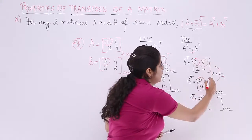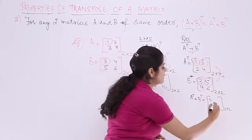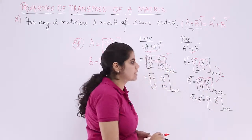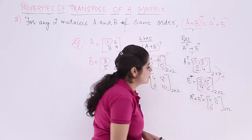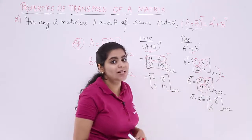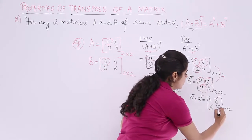Then move next. 3 plus 5 is 8. Then next, 2 plus 4 is 6. And similarly, last but not the least, 4 plus 6 is 10.